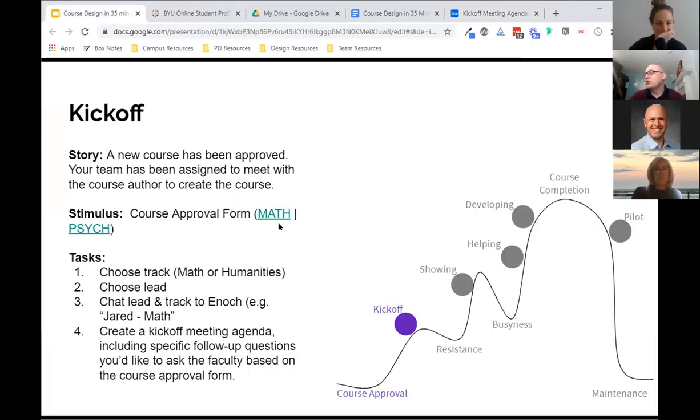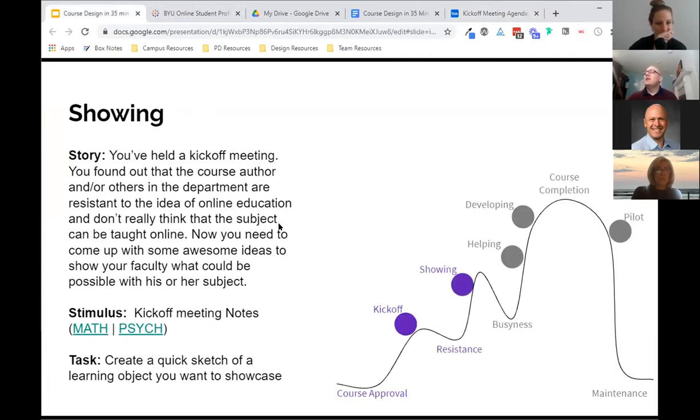Let's go ahead and go back to the story here. So in this case, you've had the kickoff meeting, but then you find out that maybe the course author or some other people in department are kind of resistant to the idea of online education. Maybe they think, oh, we really can't teach this topic online. And to kind of address that issue, you now need to come up with some cool ideas to show your faculty. What might be possible with our subject.